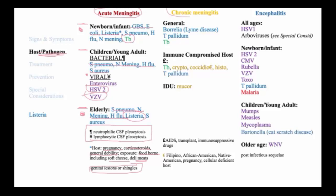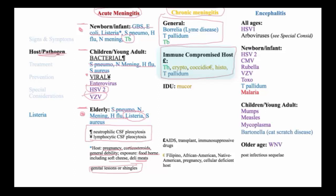Chronic meningitis has a very diverse group of pathogens according to very different hosts. In the general population, one considers Borrelia burgdorferi — the agent of Lyme disease — syphilis, and tuberculosis, among the more common causes in persons without immunodeficiencies. In the cellular immune-deficient host, tuberculosis is a predominant pathogen, as are fungal infections due to cryptococcus, coccidioidomycosis, or histoplasmosis. Syphilis also emerges because of the immune-compromised host's inability to clear that pathogen from the CSF.